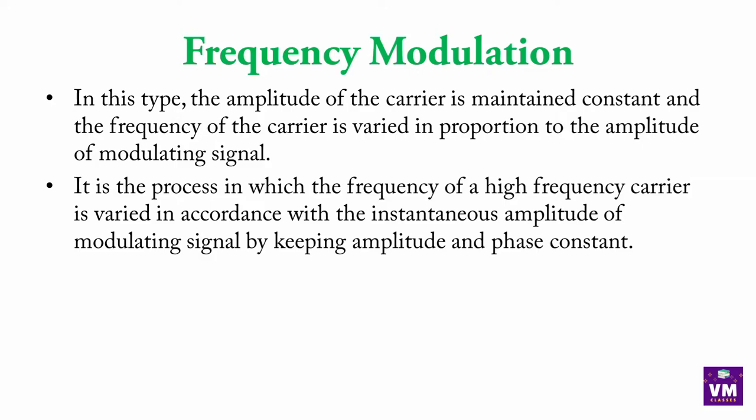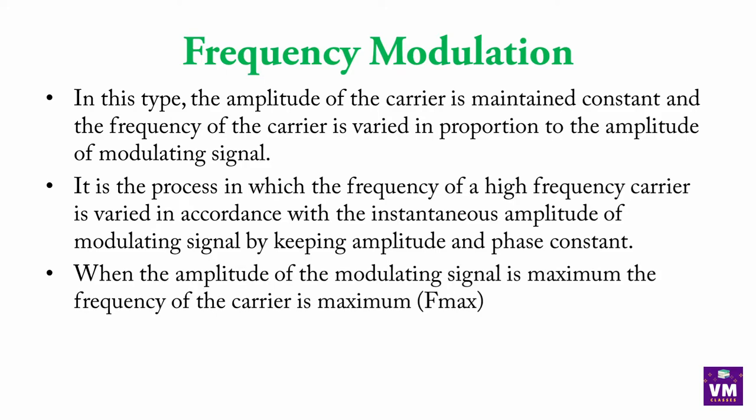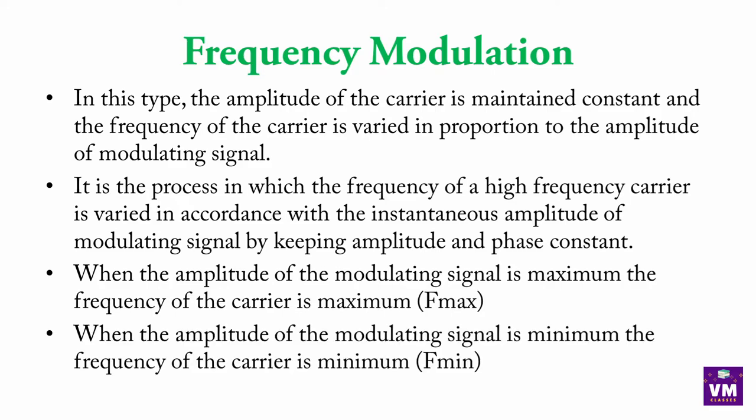It is the process in which the frequency of the high-frequency carrier is varied in accordance with the instantaneous amplitude of the modulating signal, by keeping amplitude and phase constant. When the amplitude of the modulating signal is maximum, the frequency of the carrier is maximum (F_max). Aur agar modulating signal ka amplitude minimum hai toh carrier wave ki frequency bhi minimum hoti hai.